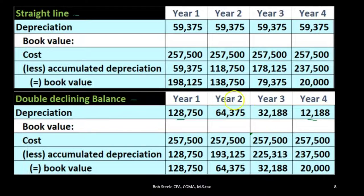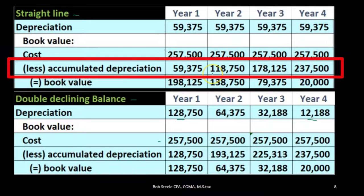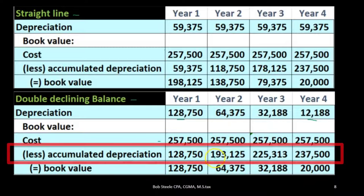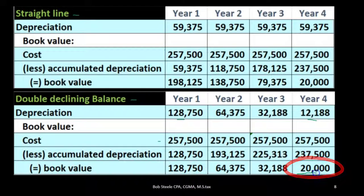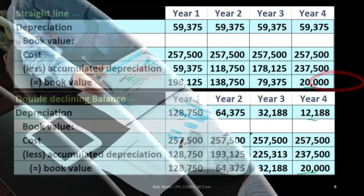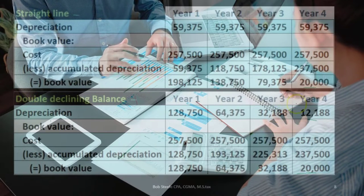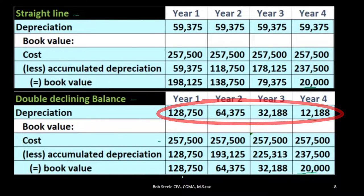The cost is the same for each method. Accumulated depreciation increases at an even rate for straight-line — $59,375 each year — while for double declining it increases at a declining rate. In either method, we end up with a book value equal to the salvage value. The difference between the two methods is simply timing: an accelerated method front-loads more depreciation in year one and has less in the final years.